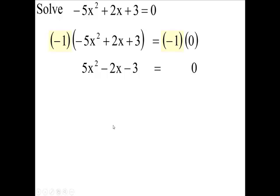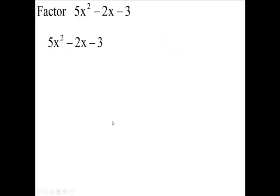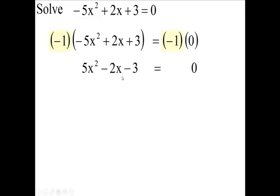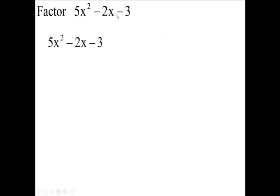Now this equals 0, so I want to use my zero factor property. Remember we want two factors that you multiply together to give you 0. So I have to factor this left side here. So that's my next job here is to factor this.